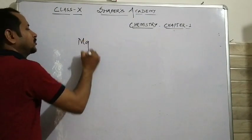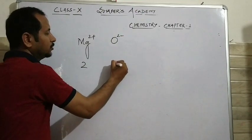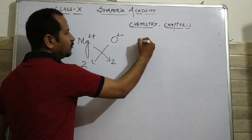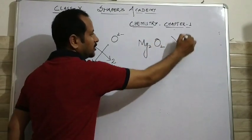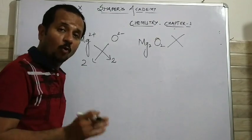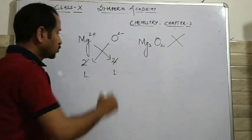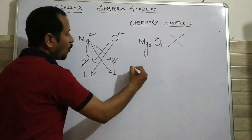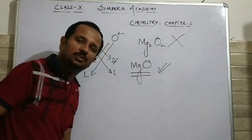Like magnesium oxide — what is the valency of magnesium here? 2. Valency of oxygen? 2. So as according to you, the formula of magnesium oxide would have 2 atoms of magnesium and 2 atoms of oxygen. But no, this is not the correct formula. Whenever you are getting numbers which can be divided by a common number, just cancel them first. 2 and 2 cancel to give 1 and 1. So the correct formula of magnesium oxide is MgO.